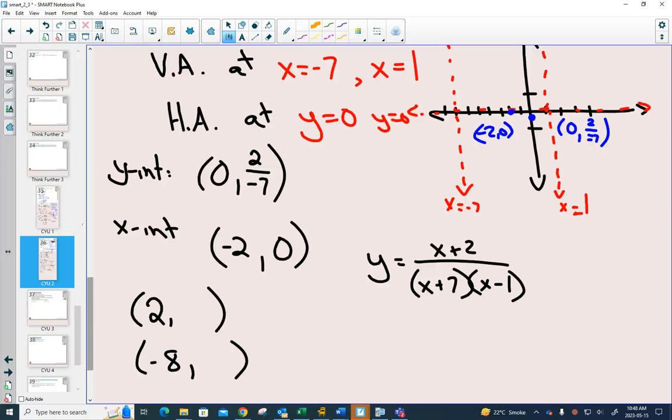If you plug in 2, can you see that you would get a 4 in that top? You would get a 9 here and a 1 there if you plugged in 2. So that reduces to 4 9ths. So I have a point 2 comma 4 9ths. I can put that onto my graph. 2 comma 4 9ths.